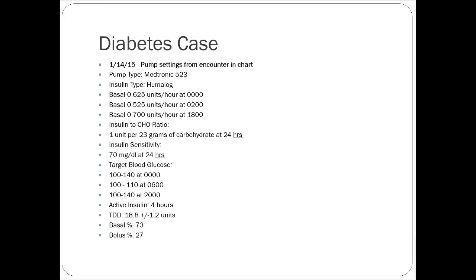I looked in her chart and found she was followed by a lineup for her Type 1 diabetes management. Her pump settings were documented — the type of insulin, basal units, rate changes, and time intervals. Her total daily dose was 18.8 plus or minus 1.2 units, with the basal versus bolus breakdown shown. That gives you a good frame of reference for how much injectable insulin to use in the interim.